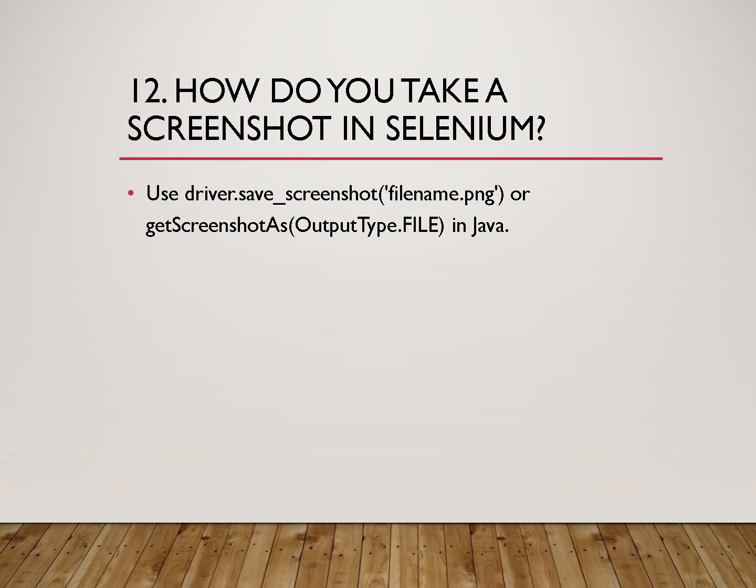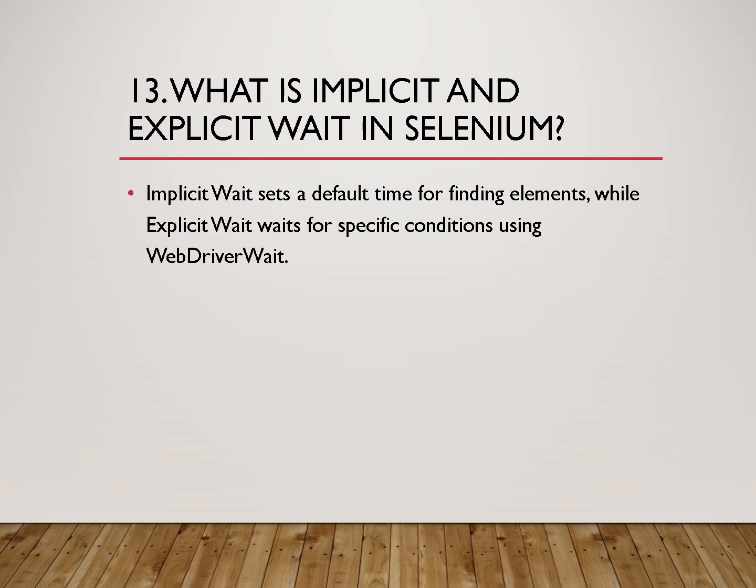The next question is: how do you take a screenshot in Selenium? For that, we have the method getScreenshotAs(). The next question is: what is implicit and explicit wait in Selenium? Basically, implicit wait sets a default waiting time for finding elements, while explicit wait waits for a specific condition using WebDriverWait. We are also having a third type called fluent wait, which will impress the interviewer when you mention it.